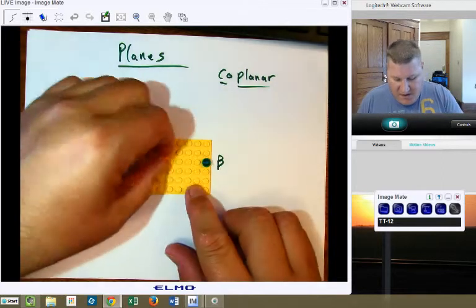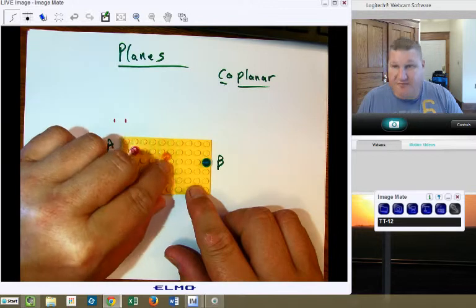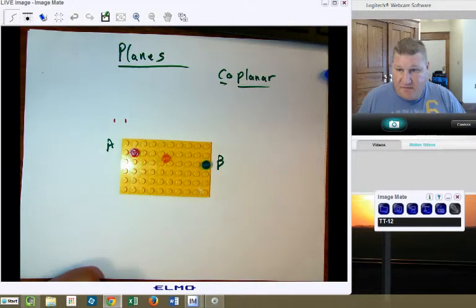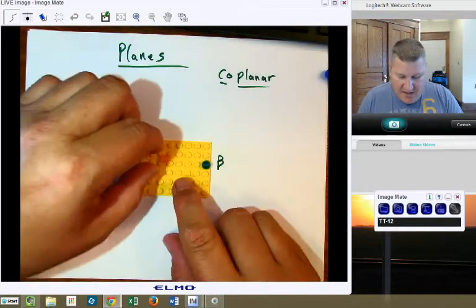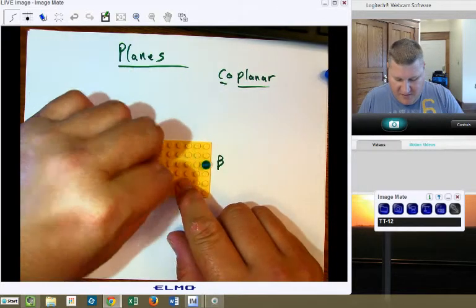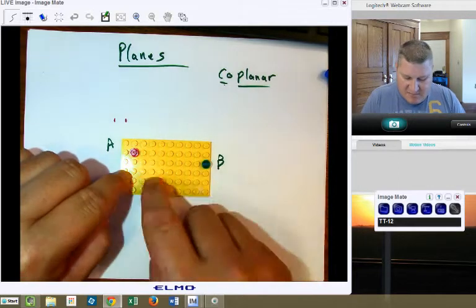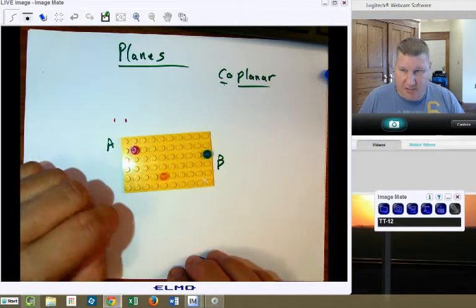However, if I put a third point in now, if I put it here, that point looks to be co-linear because it would be on the same line. However, if I move that point here, that is no longer co-linear, but they do remain because they're on the same plane co-planar.